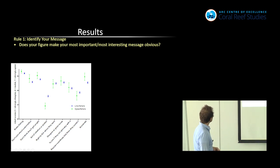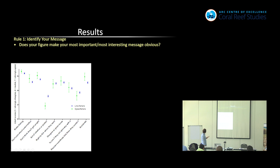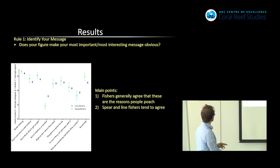So this was a figure he did, which I guess it looks fine until you find out what he was actually trying to show here. His main points were that fishers generally agree that these are the reasons that people poach, and that spear fishers and line fishers tend to agree. And the whole thing that you have to know to understand all of this is this bit here, that four is neutral, and this means disagree, and this means agree. Would you ever know that looking at this? So in his brain, that was very clear because he'd put that on the axis there and everyone should get that. But that actually doesn't sing out this message that's there.